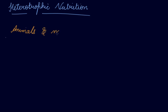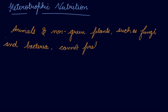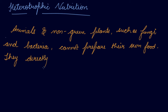Animals and non-green plants — because green plants can prepare their own food, whereas non-green plants such as fungi and bacteria cannot prepare their own food — directly or indirectly depend on green plants.